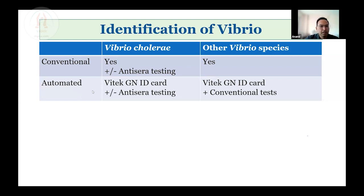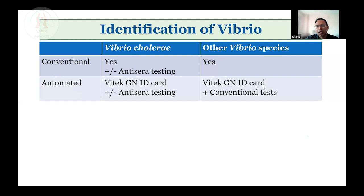Automated identification of Vibrio cholerae using Vitek GNID card followed by anti-sera testing is also acceptable. As far as other species of Vibrio are concerned, conventional method is better using biochemical tests. They can also be identified using Vitek GNID card with appropriate supplementary conventional biochemical tests.